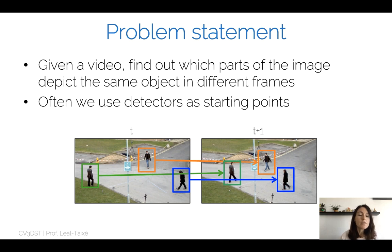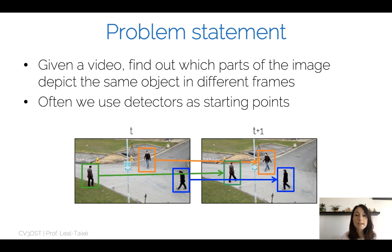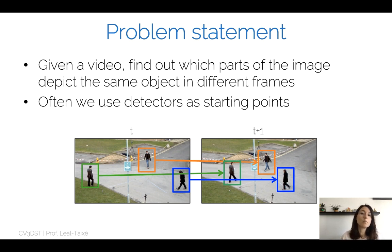We first want to detect these objects on each frame. We use the detectors that we have studied in the past two lectures as a starting point. At each frame, I can run my detector and know which parts of the image are interesting, and then make the association from one frame t to another frame t plus one.